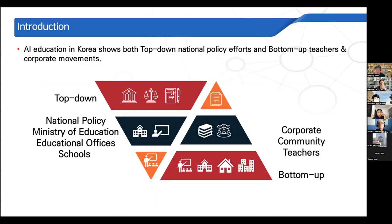Last year I already presented about AI education in Korea. AI education shows both top-down national policy and bottom-up teacher and corporate movements. In the top-down movement, the government makes national policy, and the Ministry of Education, educational offices, and schools each have their own role. In the bottom-up movement, every teacher has their own community, and teachers form learning communities to share teaching plans and know-how about AI.